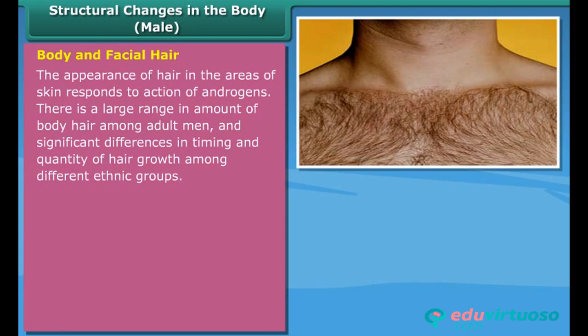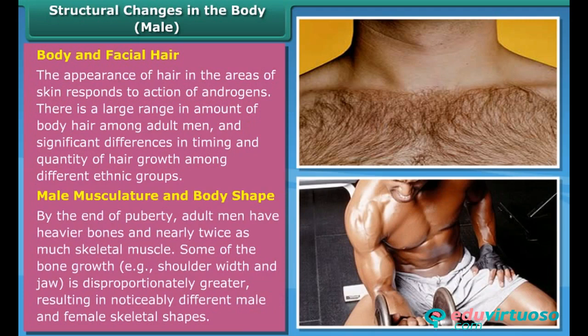Body and facial hair: the appearance of hair in various areas of skin responds to the action of androgens. There is a large range in the amount of body hair among adult men and significant differences in timing and quantity of hair growth among different ethnic groups. By the end of puberty, adult men have heavier bones and nearly twice as much skeletal muscle, with disproportionately greater shoulder width and jaw, resulting in noticeably different male and female skeletal shapes.